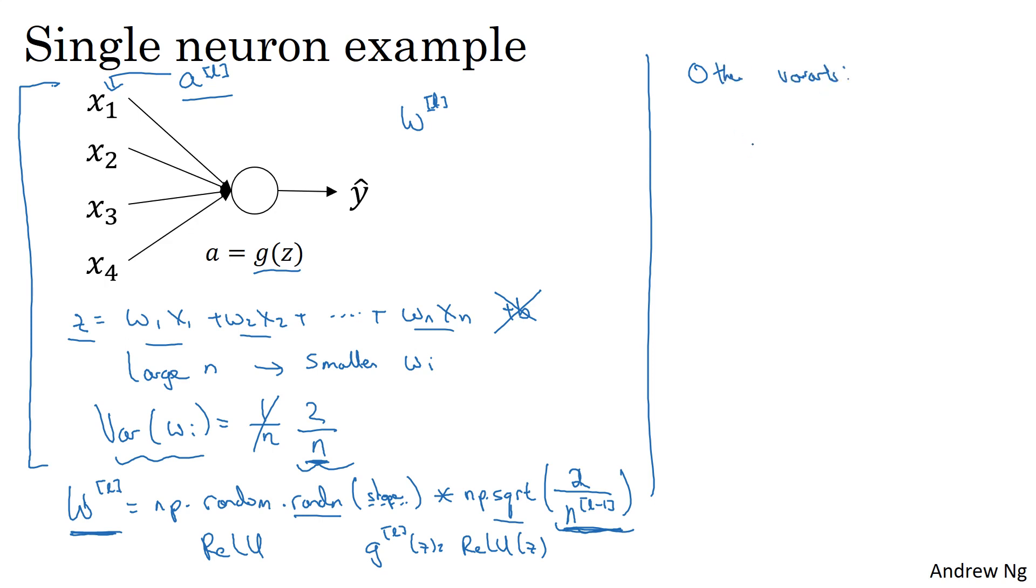I'll just mention some other variants. The variance that we just described is assuming a ReLU activation function, and it's by a paper by He et al. A few other variants, if you are using a tanh activation function, then there's a paper that shows that instead of using the constant 2, it's better to use the constant 1, and so 1 over this instead of 2, and so you multiply by the square root of this. And you use this if you're using a tanh activation function. This is called Xavier initialization.